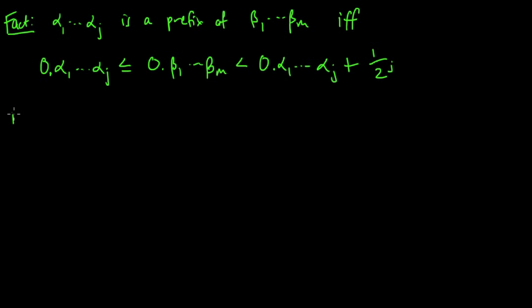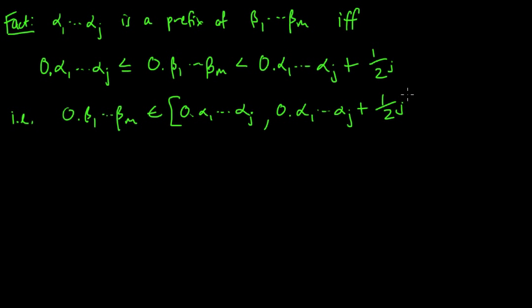And so in other words, i.e., this is true if and only if, just another way of writing that, if this number falls in the interval alpha_1 to alpha_J, 2 to this, alpha_1 to alpha_J plus 1 over 2 to the J. Open. This is strictly here. This is less or equal to here.